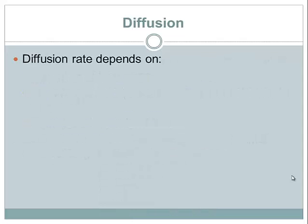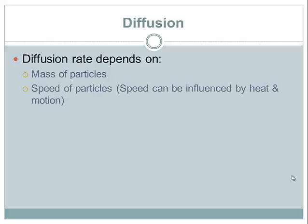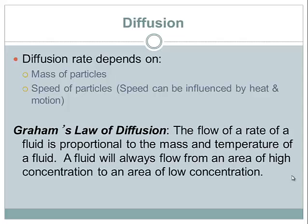To finish up with diffusion: the diffusion rate — how fast or slow a gas or liquid diffuses — depends on a few things. One is the mass of the particles, meaning how large or small those individual molecules, ions, or atoms are. The other is the speed of the particles, which can be affected by heat or motion — hot fluids versus cold fluids, or stirring or blowing on them. This is explained by Graham's law of diffusion: the flow rate of a fluid is proportional to the mass and temperature of the fluid.